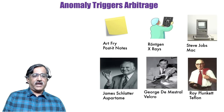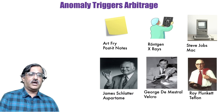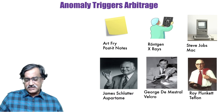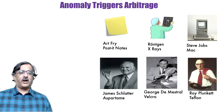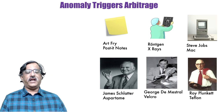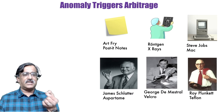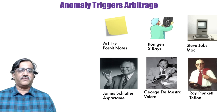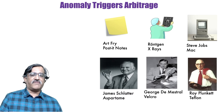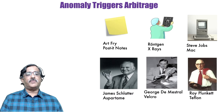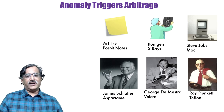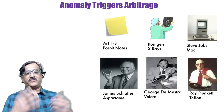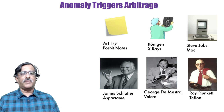James Schlatter discovered Aspartame similarly. George de Mestral and his dog went out on a hunting expedition, and when they came back, George noticed that tiny seeds were sticking to him as well as to the dog's fur — but he was able to brush them off quickly even though they were sticking. Curious, he looked at the seeds under a microscope, saw that there were tiny hooks in the seed, which led him to the invention of Velcro. Roy Plunkett discovered Teflon, Röntgen discovered X-rays, and Steve Jobs noticed the anomaly of the beautiful hand-calligraphed signs on the Reed College campus, which he later arbitraged into the font system of the Macintosh.